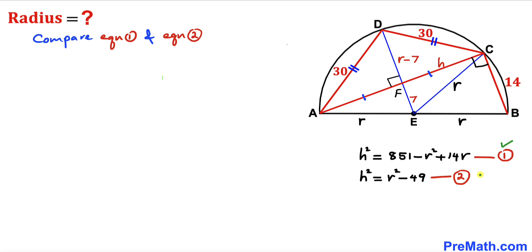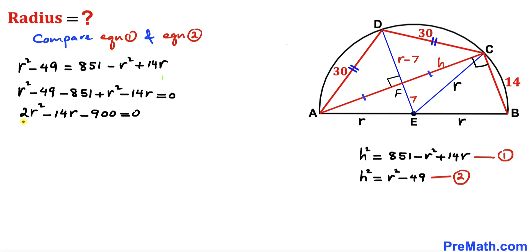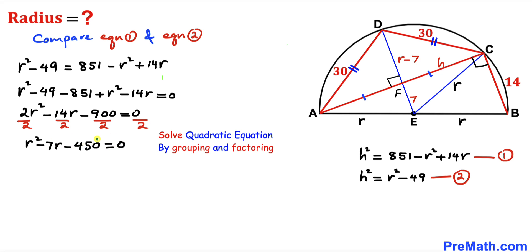Comparing Equations 1 and 2, since the left-hand sides are equal, we equate the right-hand sides: r² minus 49 equals 851 plus 14r minus r². Moving everything to the left side and combining like terms, then dividing every term by 2, we obtain the quadratic equation: r² minus 7r minus 450 equals 0.